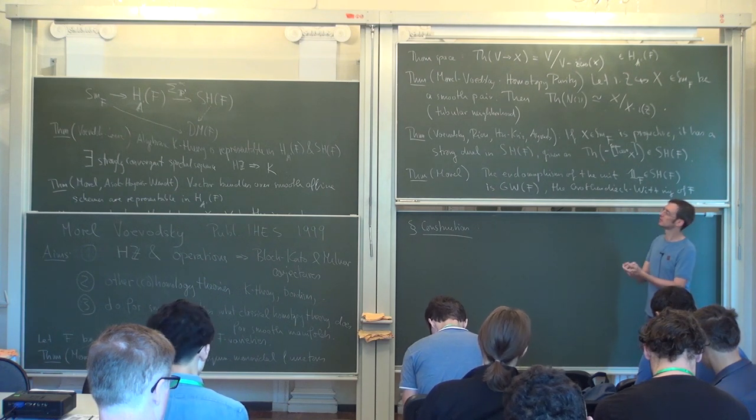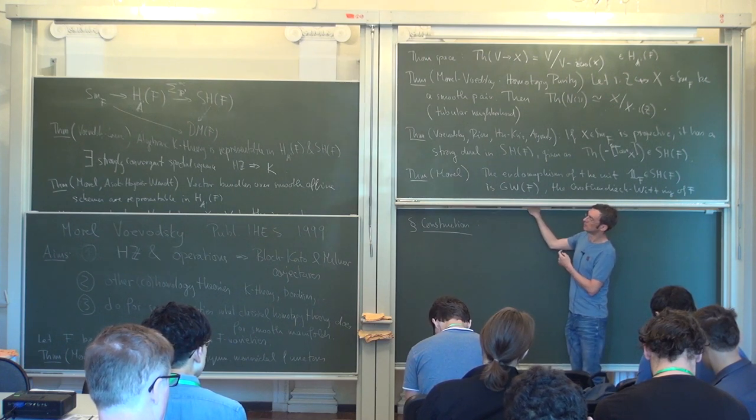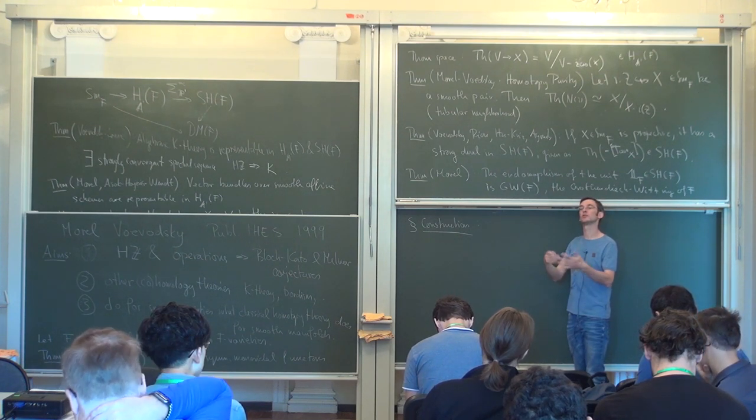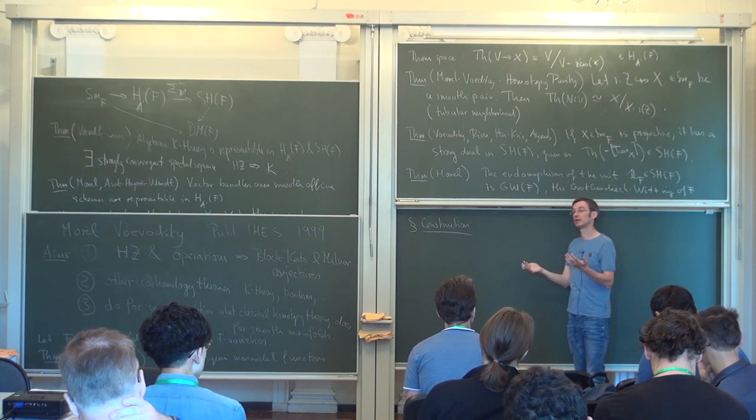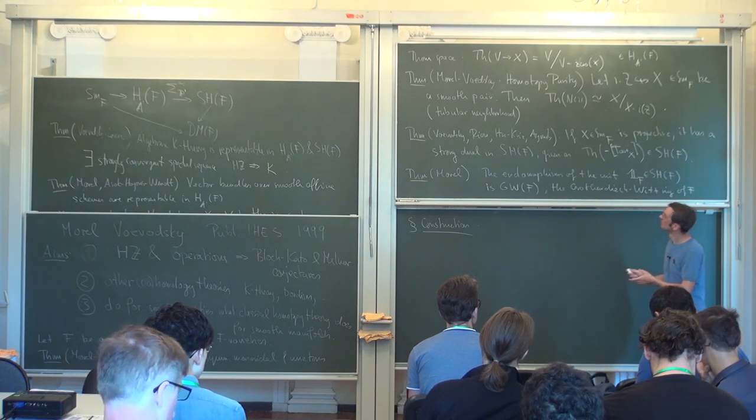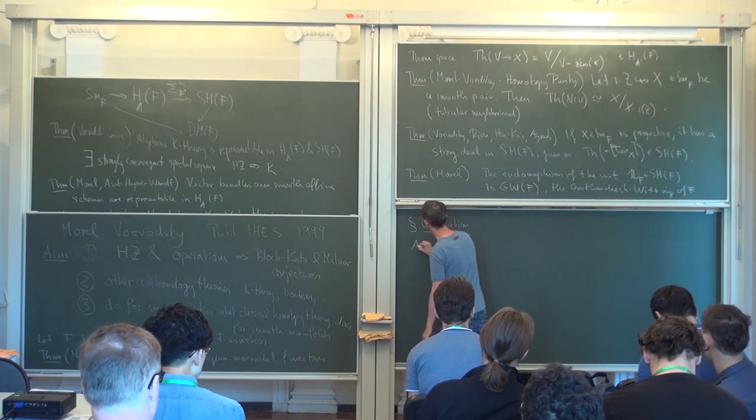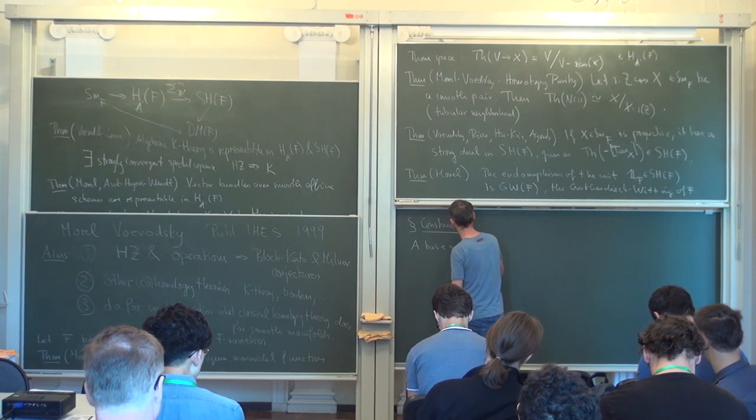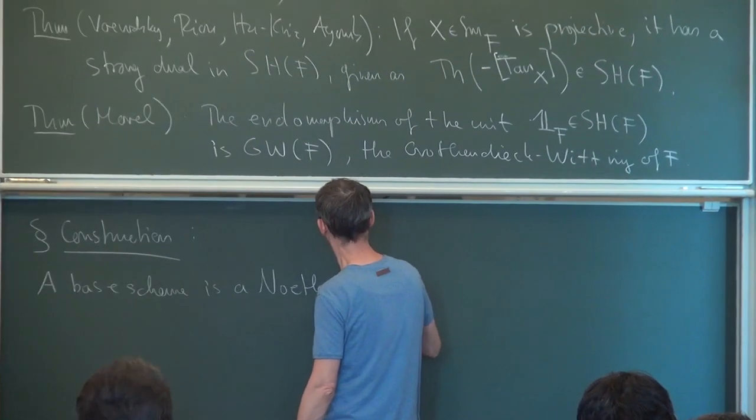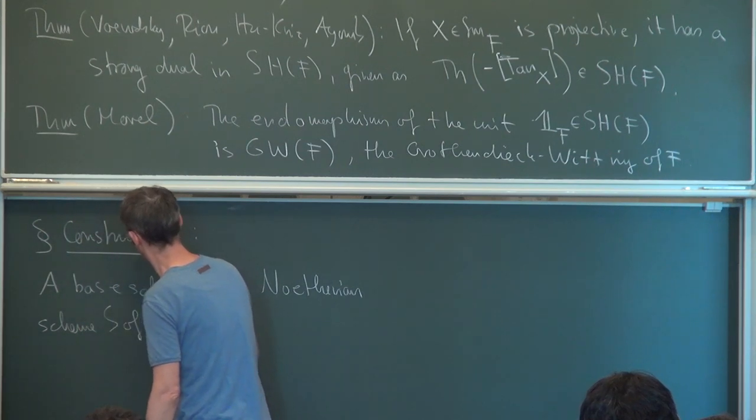So first of all, when it comes to discussing functoriality—and this will be employed in Frédéric Déglise's talk—it makes sense to think of this homotopy theory not only over the spectrum of a field but over more general schemes. A particularly interesting case is the case of Dedekind rings. So the convenience setup is the following: we say that a base scheme is a Noetherian scheme of finite Krull dimension.